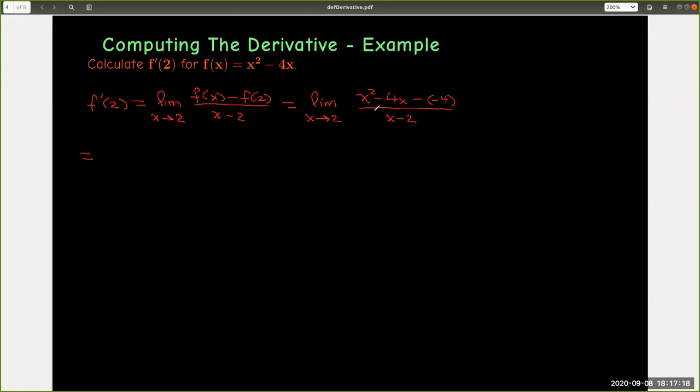So I'll get a plus 4 here, which means I can factor the numerator as (x - 2) times (x - 2).